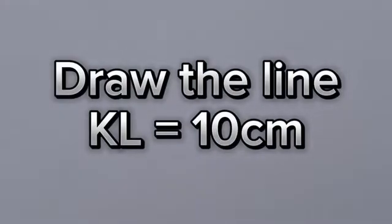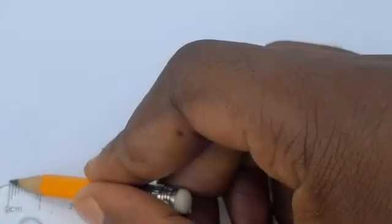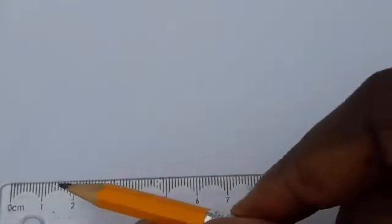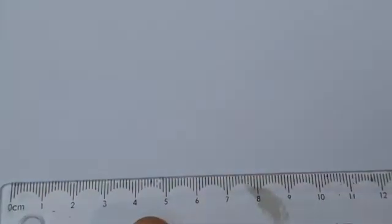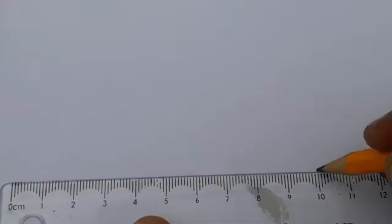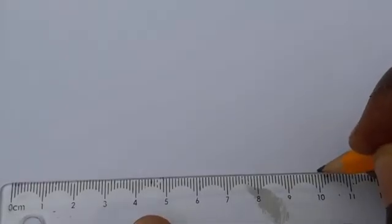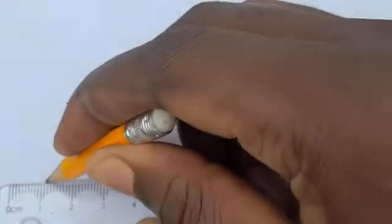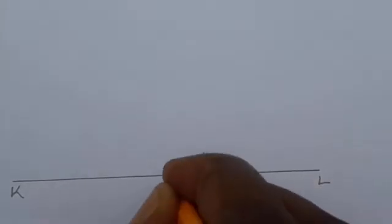The first step is to draw the line KL which is 10 centimeters. Get your ruler and draw line KL starting from zero — not from one, as many students mistakenly do. Start from zero up to where 10 is. Draw the line KL, label it, and write the measurement as 10 centimeters.